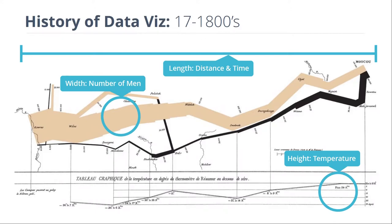Not only that, there's also a line chart down here, meant to be read from right to left following the retreat, with lines drawn from different parts of the chart up to the black band. This line chart shows the temperature — the cold, terrifying Russian winter that caused much of this tragedy. In addition, we have geographic information like rivers, and even some labels bring in weather information, like 'pluie' meaning rain. So there's so much information brought together all at once, resulting in a really compelling story.